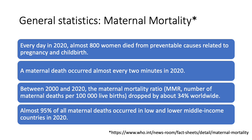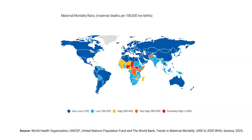The major complications that account for nearly 75 percent of these deaths are severe bleeding usually after childbirth, infections also usually after childbirth, high blood pressure during pregnancy — either preeclampsia or eclampsia — complications from delivery, and unsafe abortions. This graph from 2023 WHO data shows that overall maternal mortality remains very high in some African countries, but is generally better and lower in Western countries.